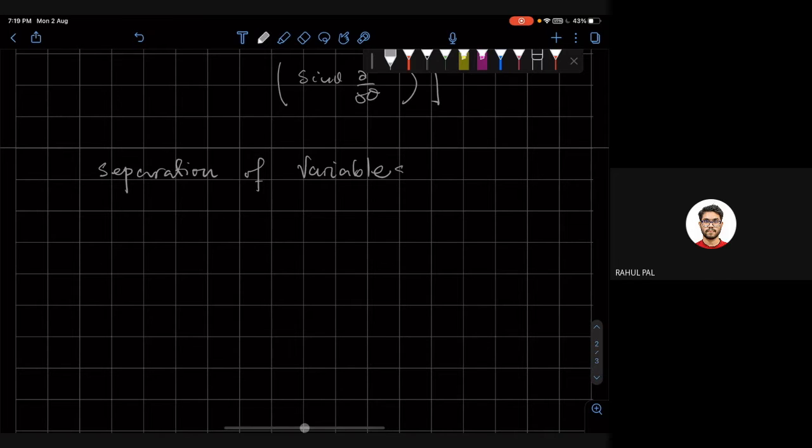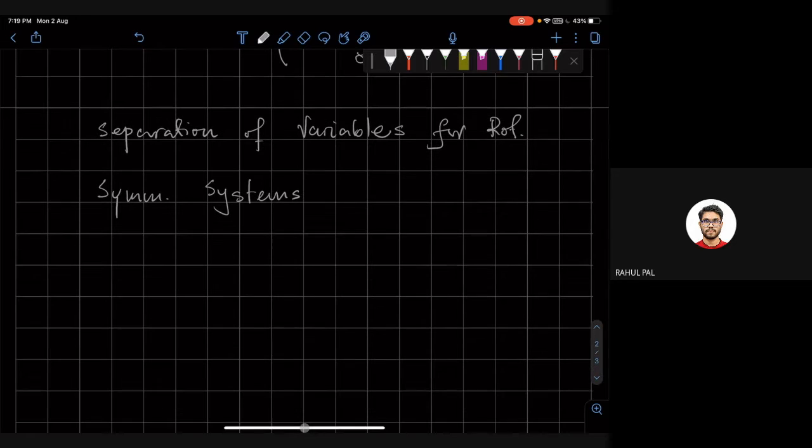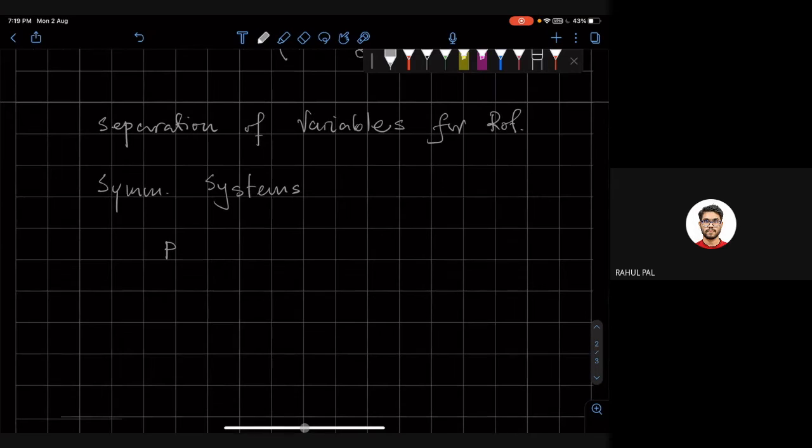Okay, separation of variables for rotationally symmetric systems. And it's something that we expect because we know that for rotationally symmetric systems, p squared is going to commute with L.